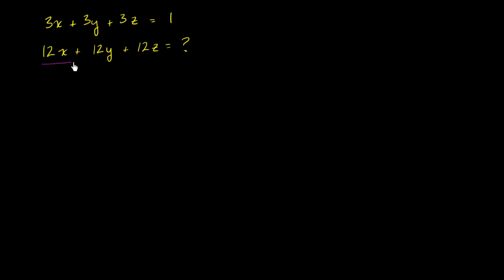Let's rewrite this second expression by factoring out the 12. So we get 12(x + y + z). That's the second expression here, and you can verify that by distributing the 12. Now, what is 12 times (x + y + z)?